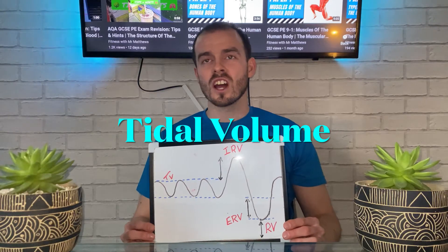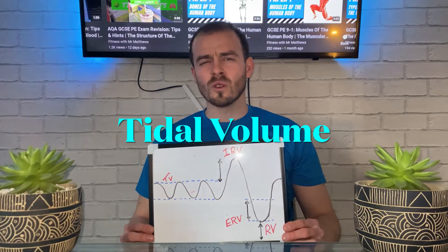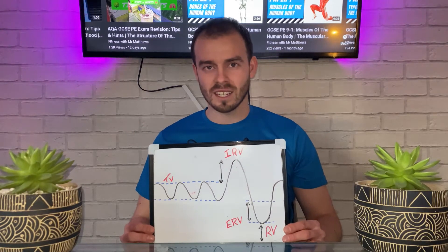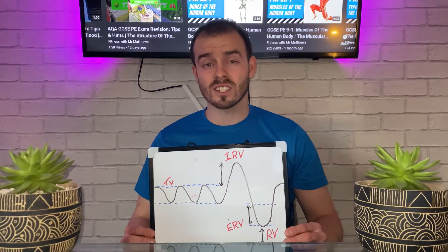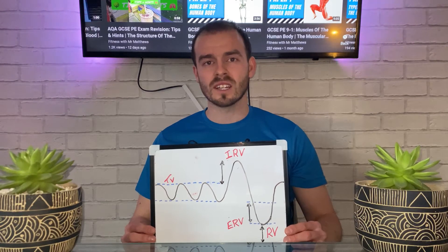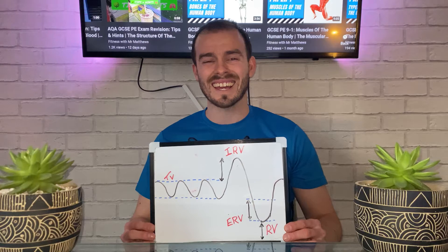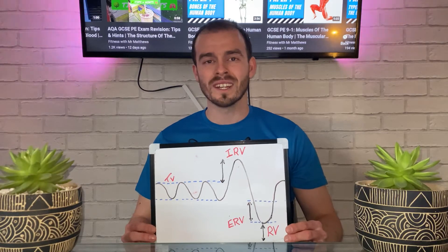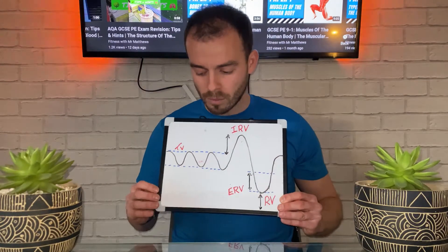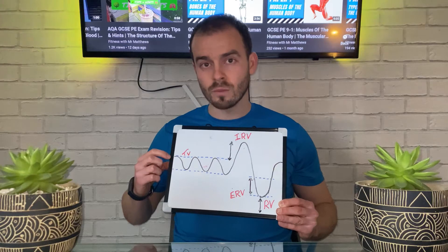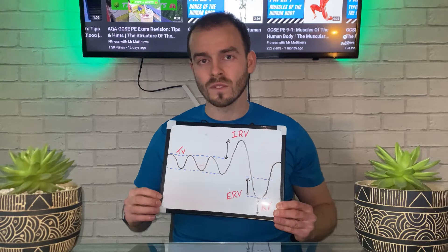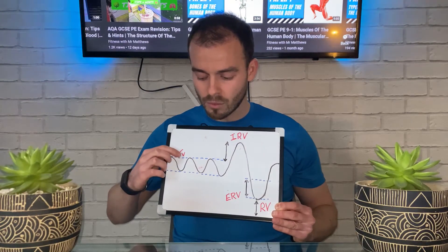Tidal volume — I want you to imagine that you're sat down on the beach in your favourite deck chair in the sun, watching the tide come in and the tide go out, repeating over and over again. So tidal volume is breathing at rest — it refers to the amount of air you take in during normal inhalation whilst resting. On the whiteboard, you can see tidal volume illustrated with these small curved dips on the left-hand side.